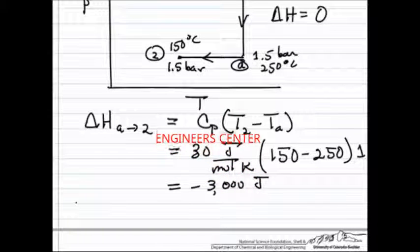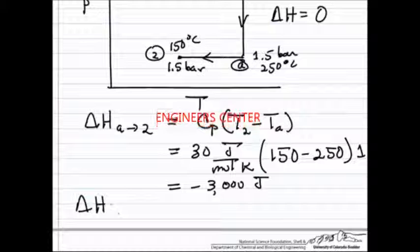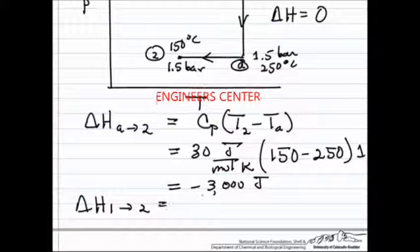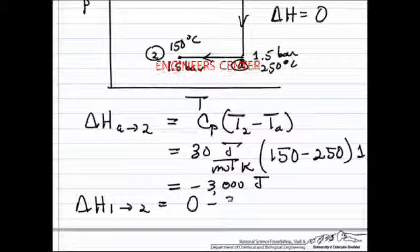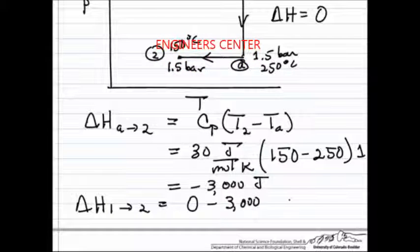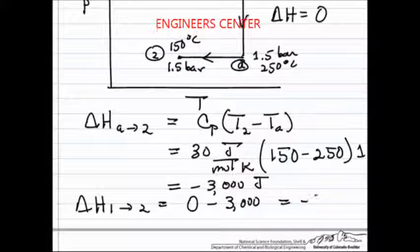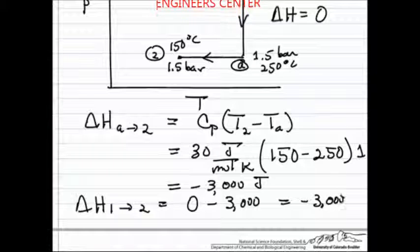The total change then for going from 1 to 2 is going to be 0 for the first step and then minus 3,000 joules for the second, which means the total change is minus 3,000 joules.